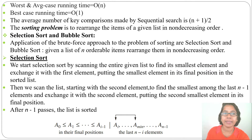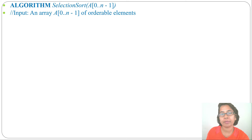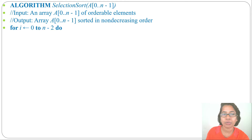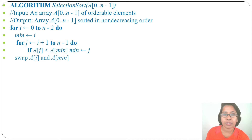Let's discuss the algorithm. For selection sort, the input is an array of orderable elements and the output is the same array in increasing order. The algorithm: for i = 0 to n minus 2, set min = i; then for j = i plus 1 to n minus 1, if A[j] < A[min] then set min = j. After the inner loop, swap A[i] with A[min].